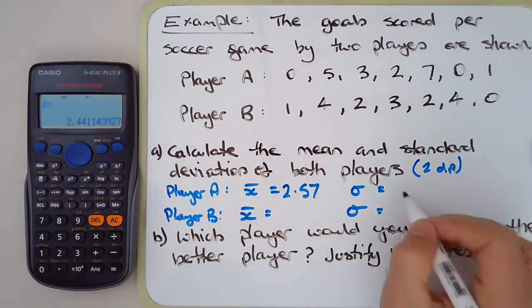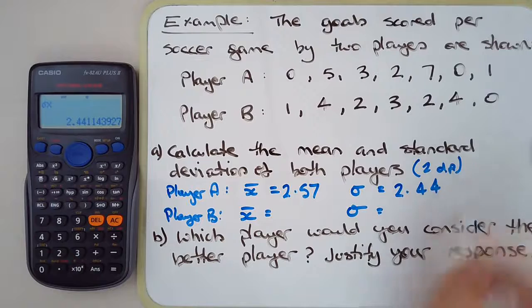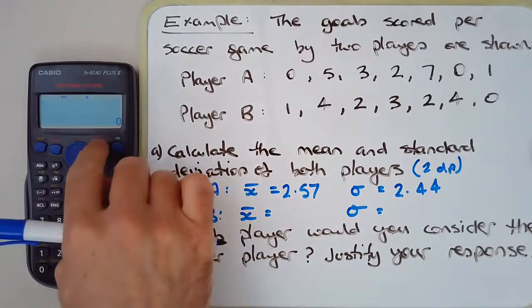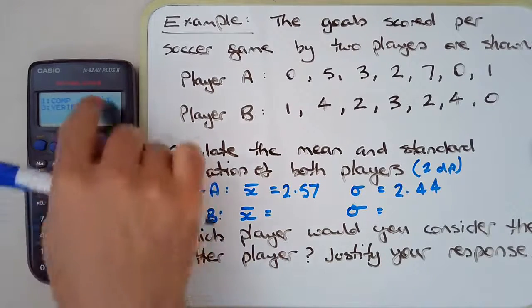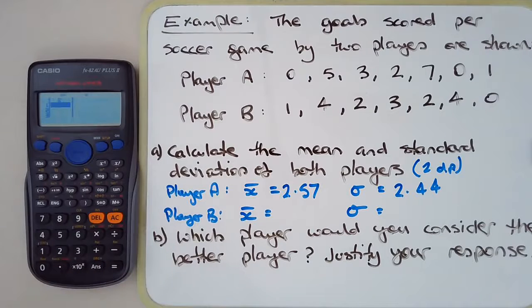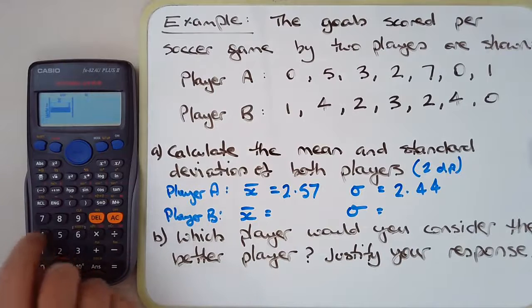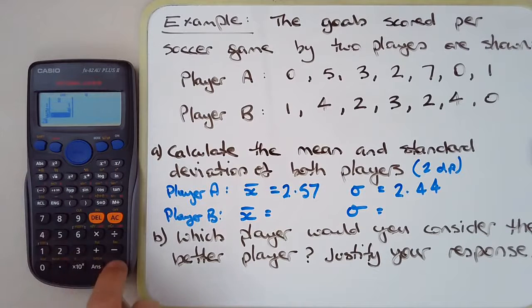Let's work out Player B. Easy way to clear the data is just to put it back into stat mode and one var again. Let's enter in Player B's data: one goal, four, two, three...